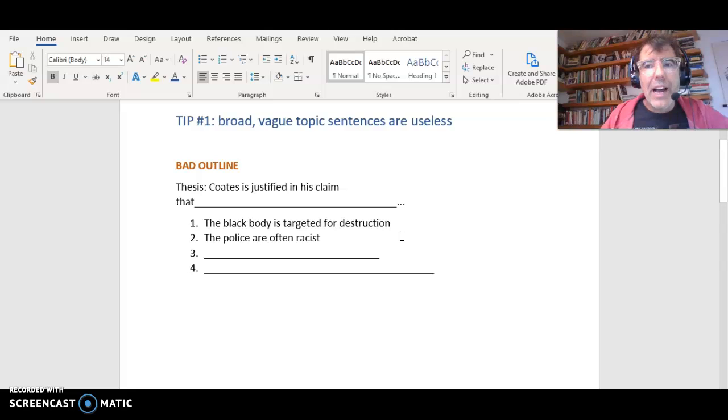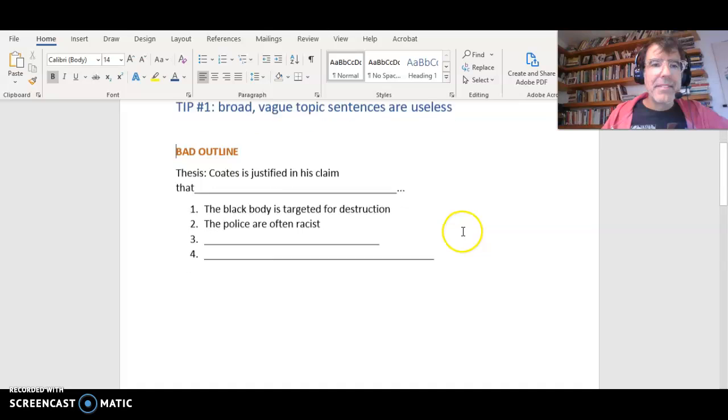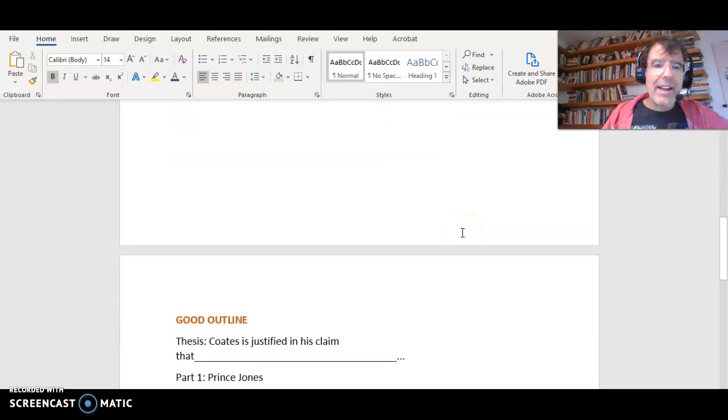When you're really outlining, it means you're choosing a specific thing for each body paragraph. You don't want to have vague statements like this in your outline, because then you won't be organized. Your essay will not go well. Let's now look at a good outline.